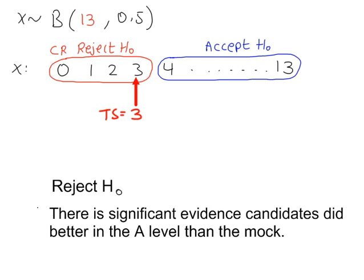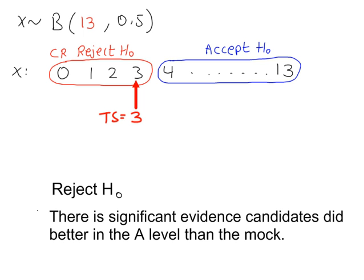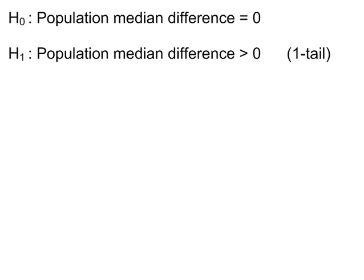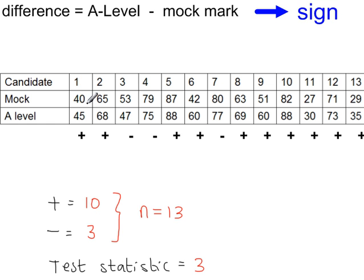What error could you have made? A type 1 error, because the conclusion is reject H0. So this test is very similar to the single sample sign test, except when you do the plus and minus signs, you do that in pairs — you compare these in pairs, instead of going back to the H0 value and comparing it to that like you did in the single sample test.